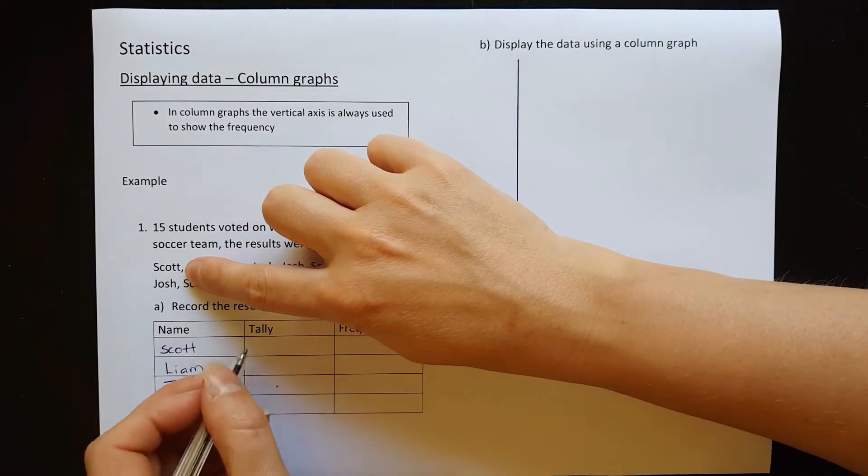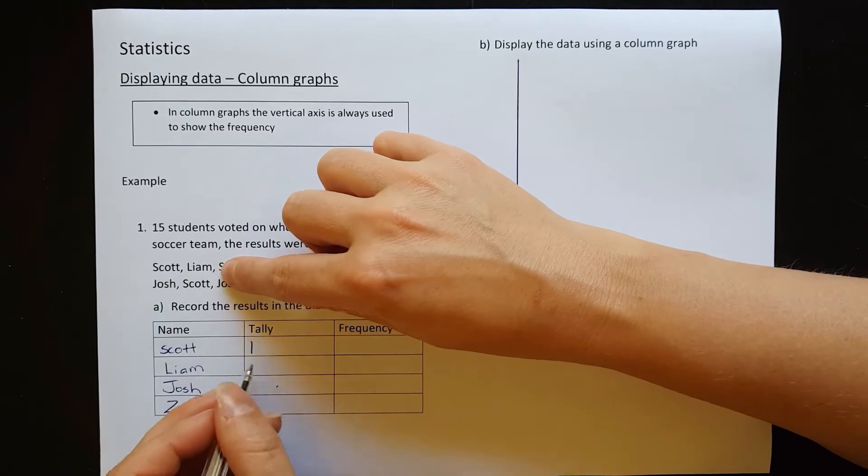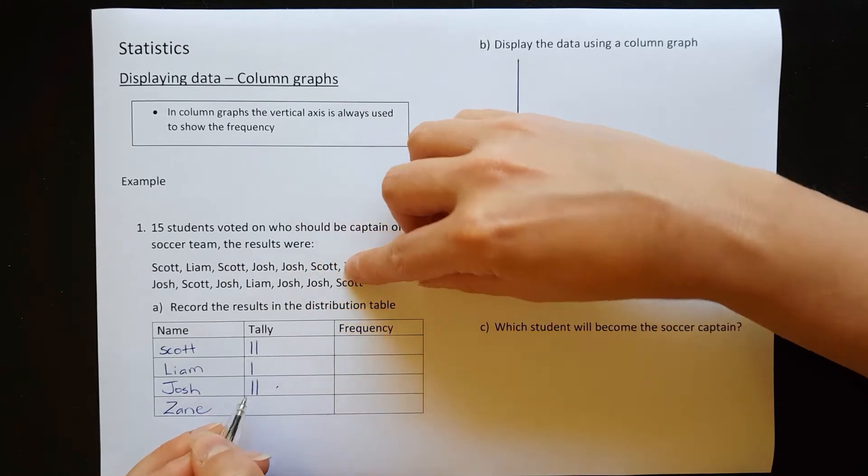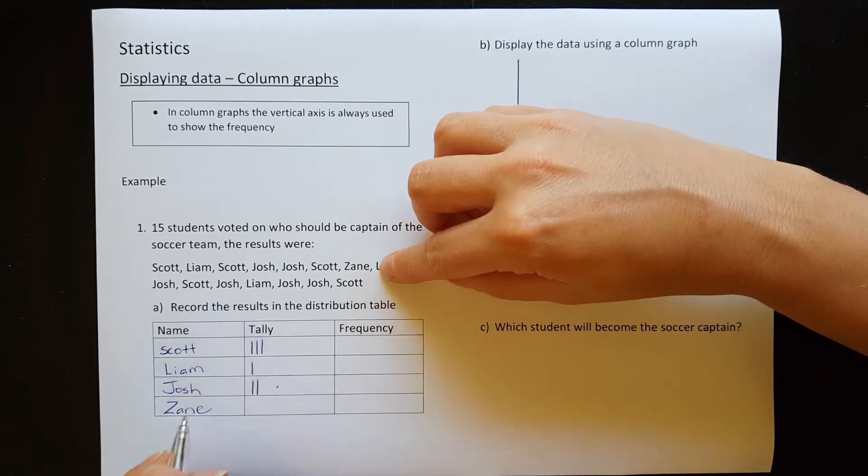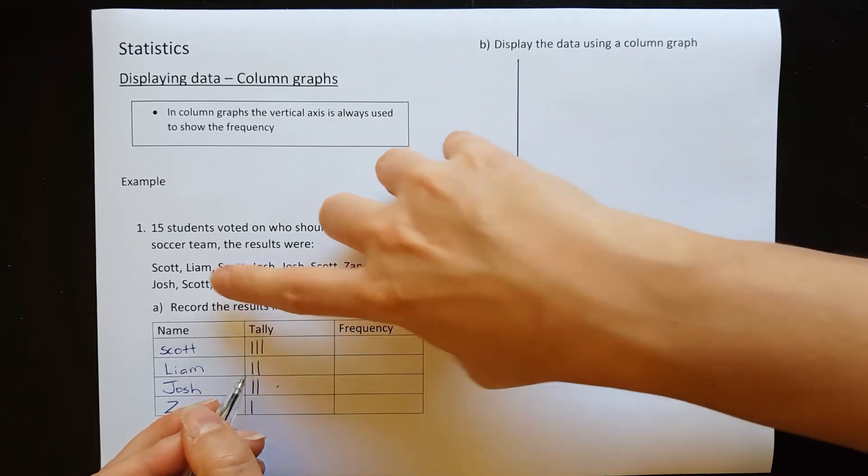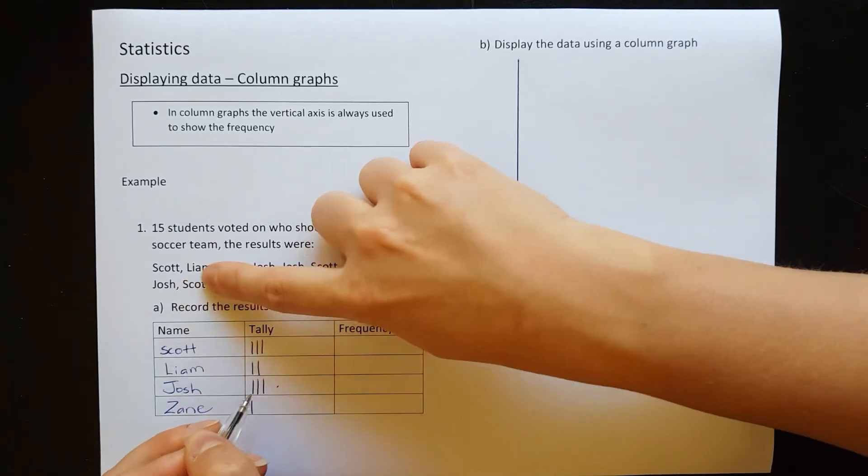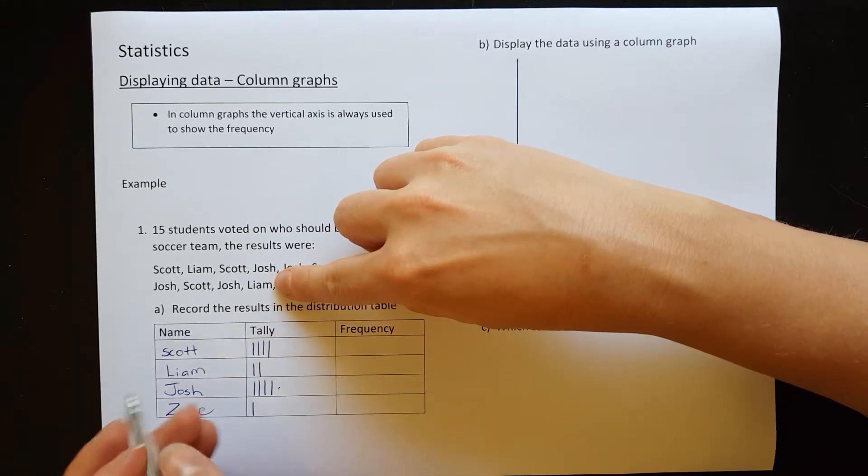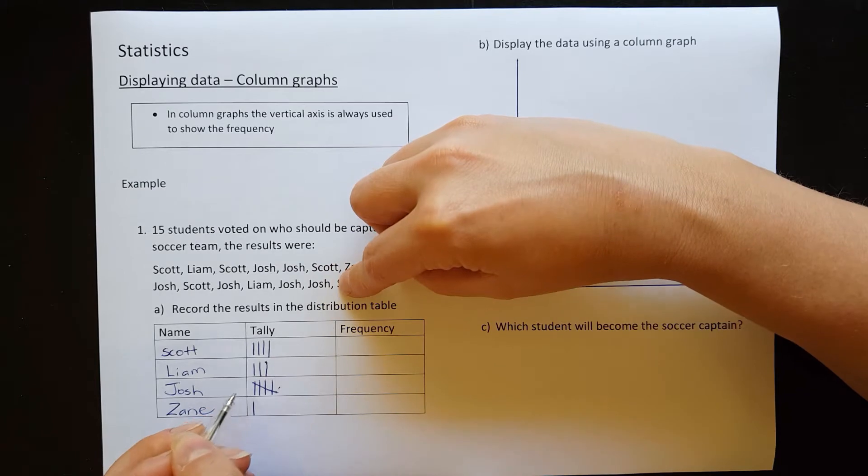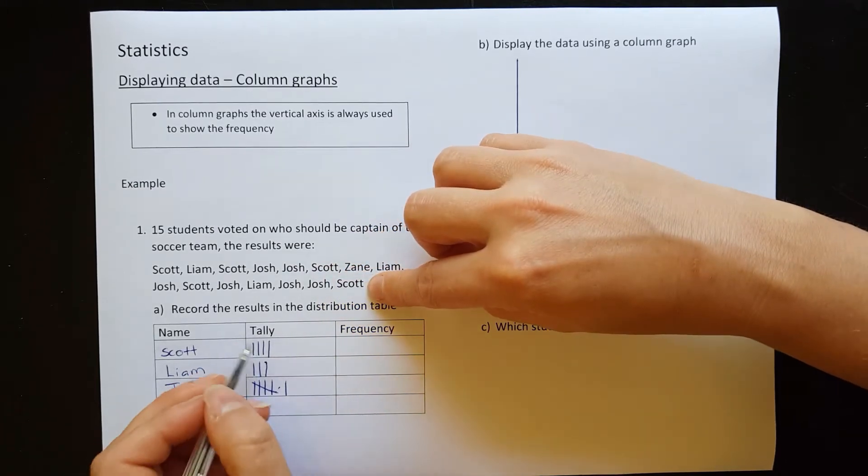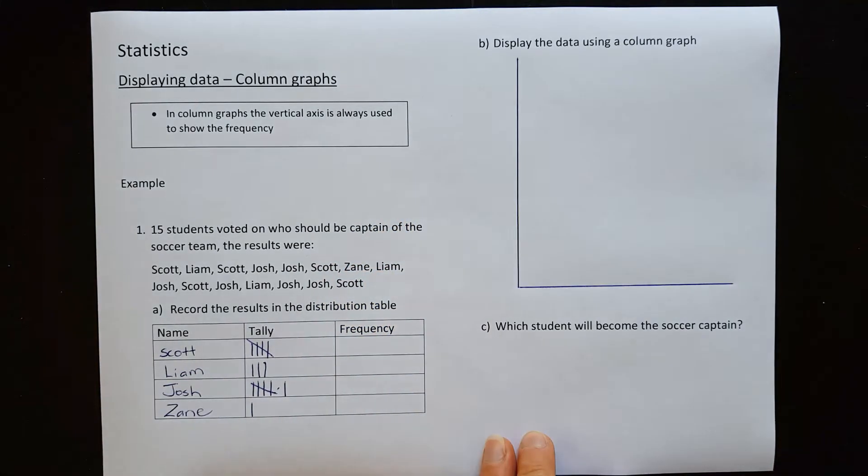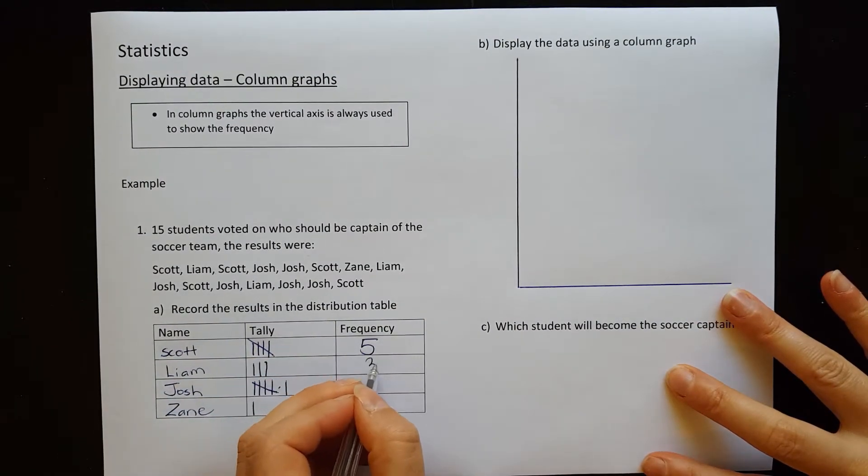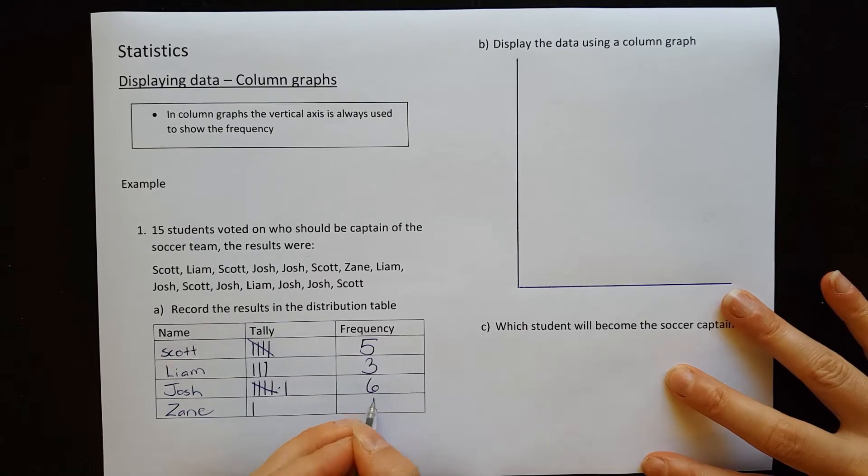So let's go through and fill in the tally. Scott gets one vote. Liam gets the next one. Scott, Josh, Josh, Scott, Zane, Liam, Josh, Scott, Josh, Liam, Josh, Josh, and Scott. So it looks like it was pretty close. Scott got five votes. Liam got three, Josh got six, and Zane got one.